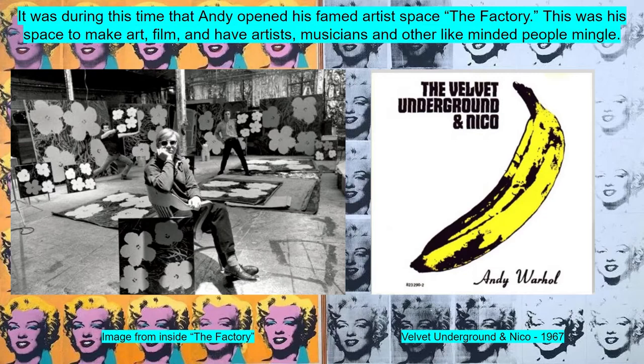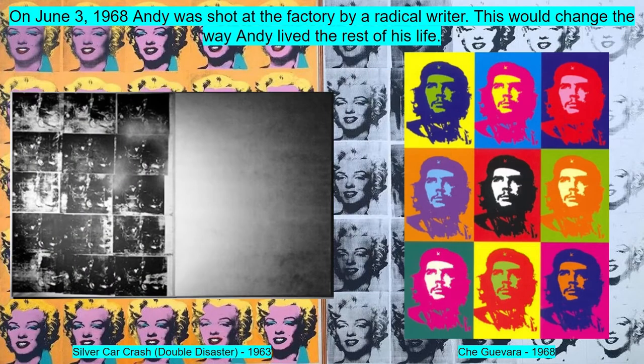The Factory was a space to make art, film, and have artists, musicians, and other like-minded people mingle. The Factory had three different locations between 1962 and 1984. The inside was decorated in tin foil, fractured mirrors, and even silver paint. On June 3rd, 1968, Andy was shot at The Factory by a radical writer named Valerie Solanis.